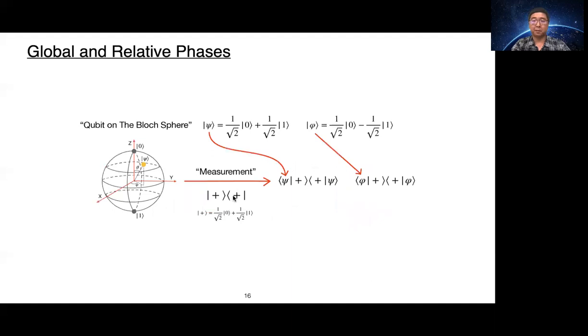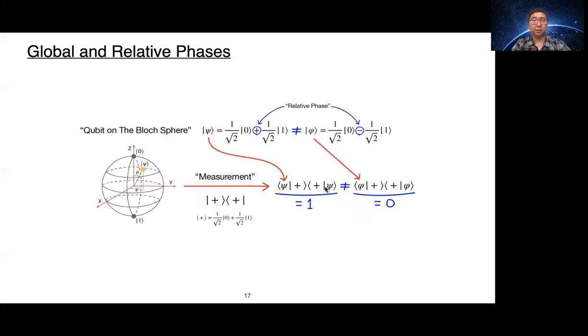Let's take a measurement of two states to see what's going on. The measurement result of the psi is 1 and the measurement result of the phi is 0. So the results are different even though two states only differ by relative phases. So there is an observable effect.